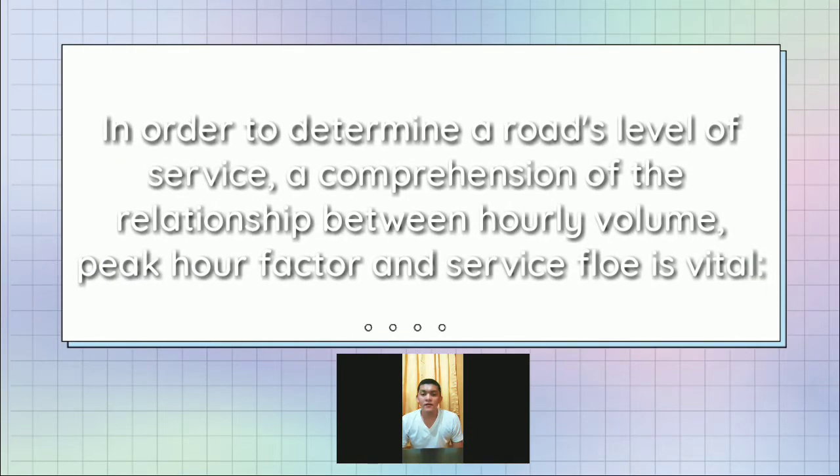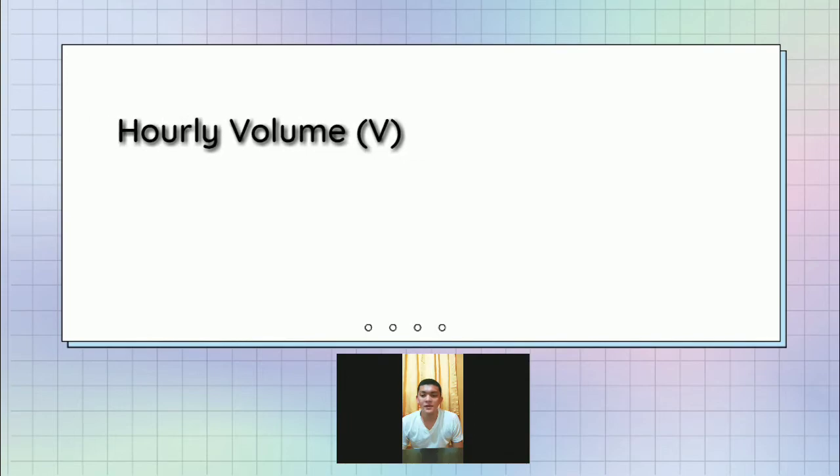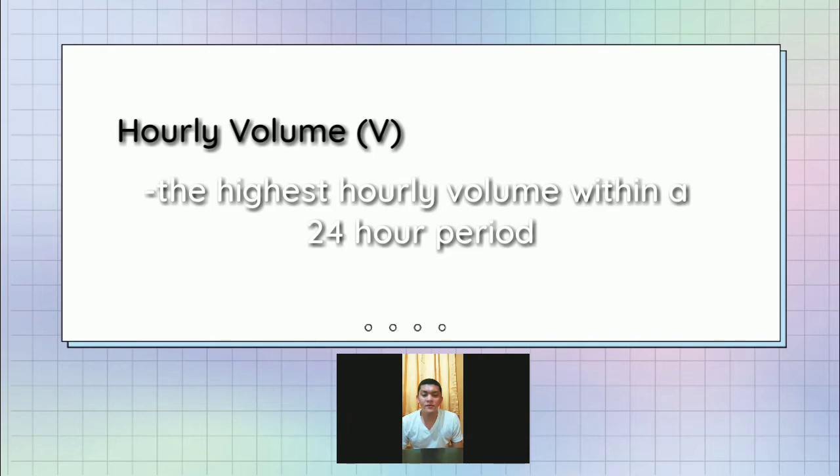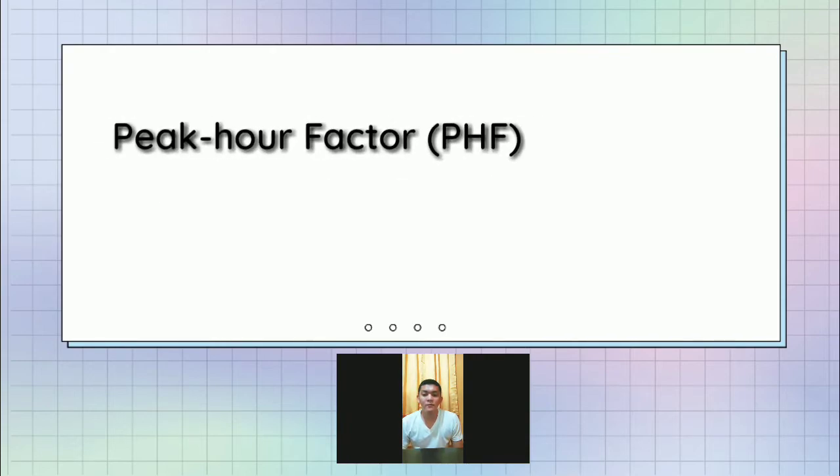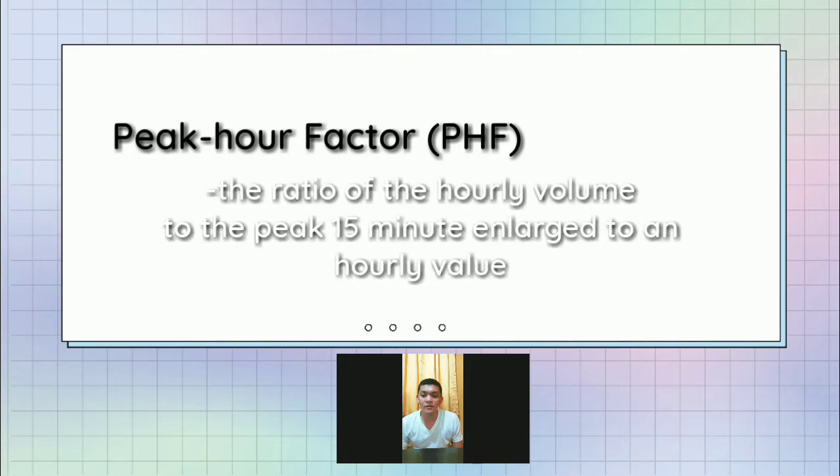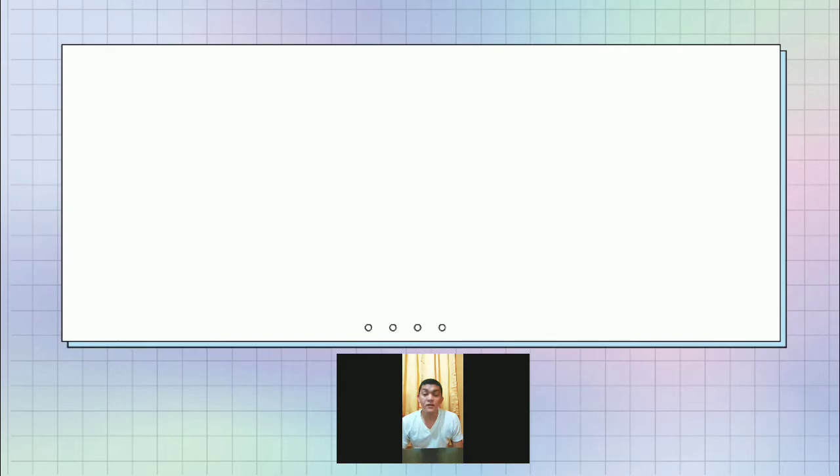In order to determine a road's level of service, a comprehension of the relationship between hourly volume, peak hour factor, and service flow is vital. The hourly volume is presented by a capital letter V, which is the highest hourly volume within a 24-hour period. PHF or peak hour factor is the ratio of the hourly volume to the peak 15-minutes flow presented with V15 and converted to an hour value. In order to get the value of PHF, we need the value of hourly volume divided by peak 15-minutes flow multiplied by 4.